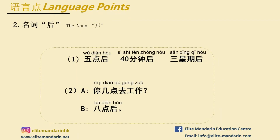后 indicates a period after the present time or the time being mentioned. For example: 五点后 — after 5 o'clock. 四十分钟后 — 40 minutes later. 三星期后 — 3 weeks later. 你几点去工作？— When are you going to work? 八点后 — after 8 o'clock.